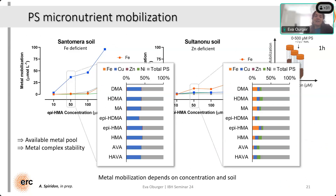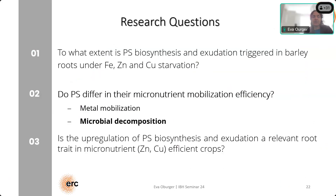What does this mean for the plants? If we look at how much of the phytosiderophore we added is actually present as metal complexes — what they see in the soil solution — something between 25 and 50% of the phytosiderophores added are actually present as phytosiderophore-metal complexes. This is what the plant can actually take up. All the rest is either present as a free ligand or is absorbed to the soil matrix. So the plant would probably only see a small fraction of what is actually released. And of course, when working in soil, there are always microbes present who very much like these low molecular weight organic compounds as an attractive food source — so microbial decomposition also plays a role.